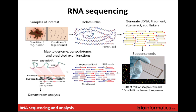This is a typical RNA-seq workflow at a very high level. Imagine we have samples of interest — condition one and condition two — perhaps a tumor and a normal. From each sample we isolate RNA, generate cDNA, fragment it, size-select it, and add sequencing linkers. These small fragments made from the larger RNAs are then flowed across a sequencing flow cell.